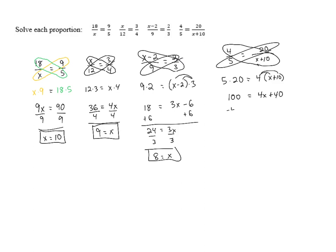We want to get the x term alone. We've got to subtract 40 from both sides, giving us 60 equals 4x. And then to get x by itself, we divide by 4, giving us 15 equals x.